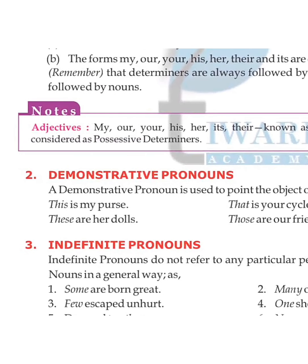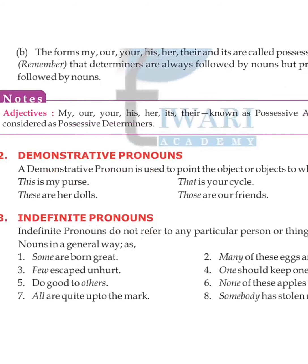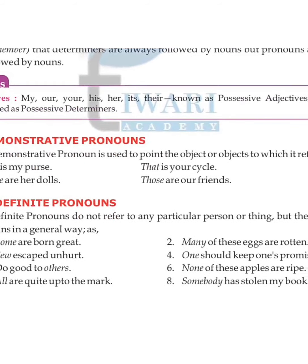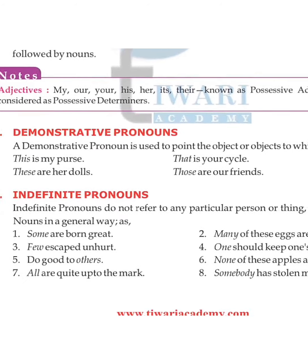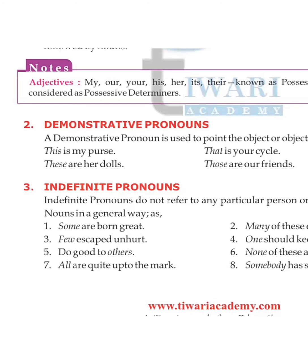A demonstrative pronoun is used to point to the object or objects to which it refers. Examples: 'This is my purse', 'That is your cycle', 'These are her dolls', 'Those are theirs'. The demonstrative pronouns are: this, these, that, those.